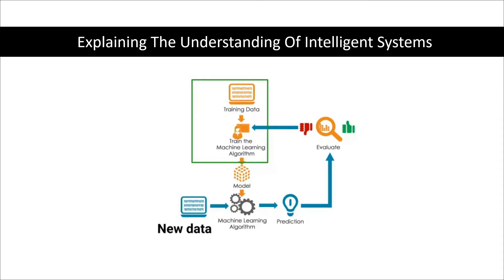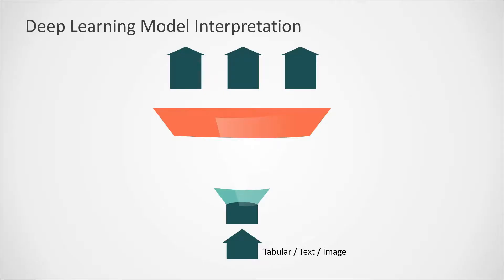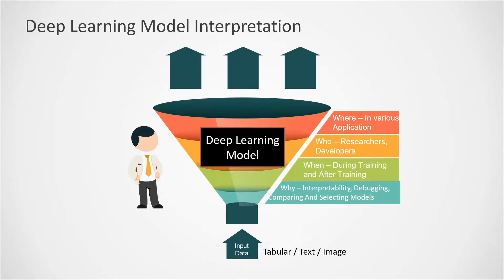But when it comes to the interpretation — why we are getting this particular output — we need a lot of research. Although in machine learning, methods are available like using the LIME package, XGBoost feature importances, and tracing back decision trees. But when it comes to deep learning, we need a lot more research, because interpreting a deep learning model is very complicated and it's a completely black box for us.